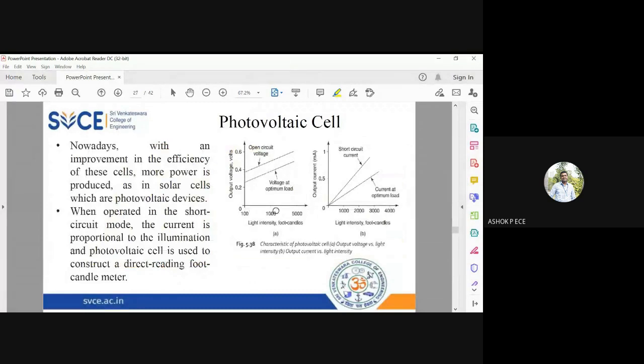The graph shows light intensity versus output voltage. As the intensity of light increases, both open-circuit voltage and voltage with load increase. Similarly, when light intensity increases, current also increases. Naturally, when V increases, I also increases proportionately according to Ohm's law, where V is proportional to I.